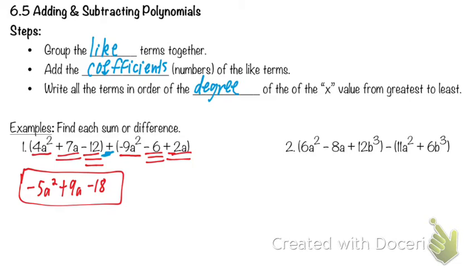Any questions on number 1? Is this very different from what we were doing? Not really. The difference is going to come right here in number 2. What operation are we doing between these parentheses now? Subtracting. That's going to change it a little bit.